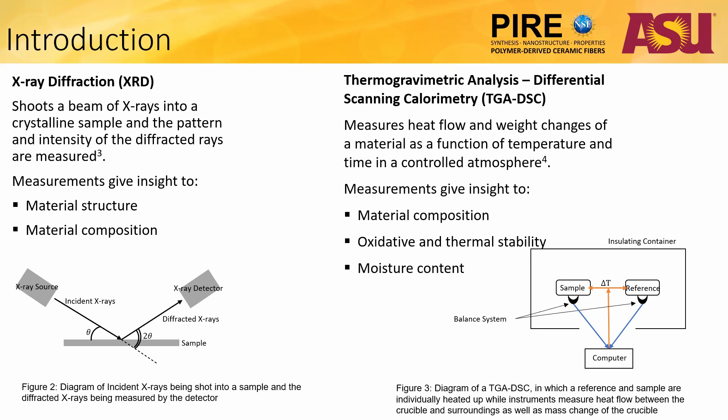Thermogravimetric analysis-differential scanning calorimetry, TGA-DSC, is a process in which both heat flow and weight changes in a material are measured as a function of temperature and time in a controlled atmosphere. These measurements provide insight into a material's composition, oxidative and thermal stability, as well as moisture content.